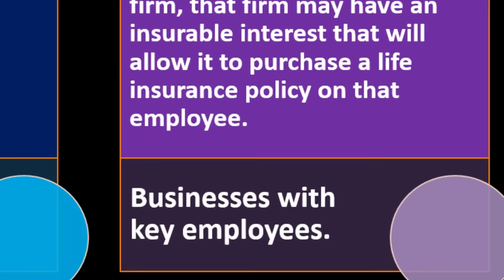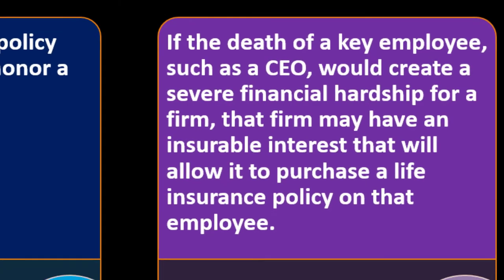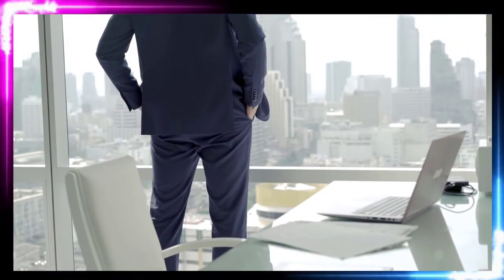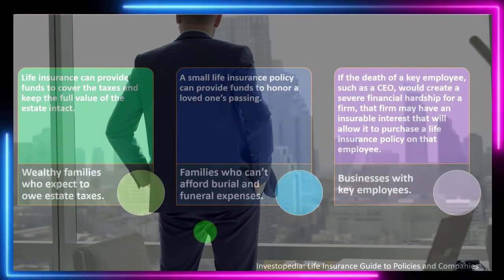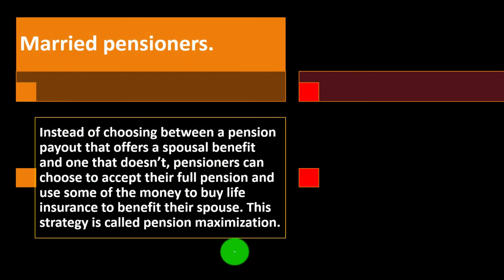Businesses with key employees: if the death of a key employee such as the CEO would create a severe financial hardship for a firm, that firm may have an insurable interest that will allow it to purchase a life insurance policy on that employee. Pensioners can choose to accept their full pension and use some of the money to buy life insurance to benefit their spouse — this strategy is called pension maximization.